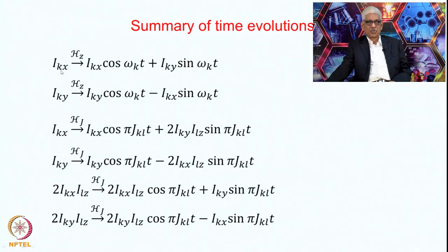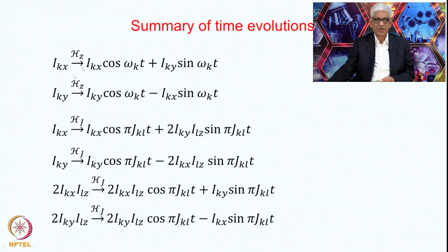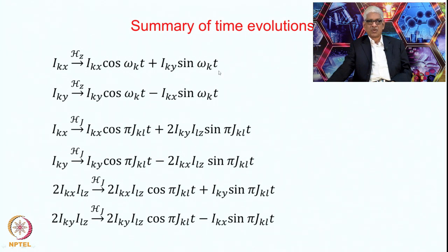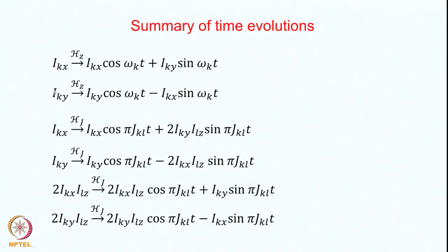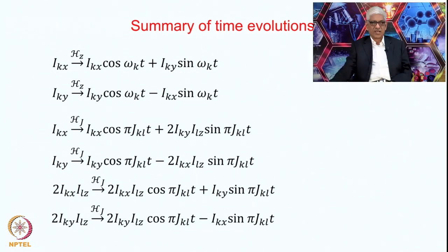Here IKx represents the in-phase magnetization of the K spin. It evolves under the influence of the chemical shift Hamiltonian Hz for a time t, giving IKx cosine(ωK t) plus IKy sin(ωK t). IKy under the same Hamiltonian for time t gives IKy cosine(ωK t) minus IKx sin(ωK t). Notice the change in sign depending on what your basis operator is — you have to be careful. This is written for the K spin but it can be for any other spin: L, M, whatever.